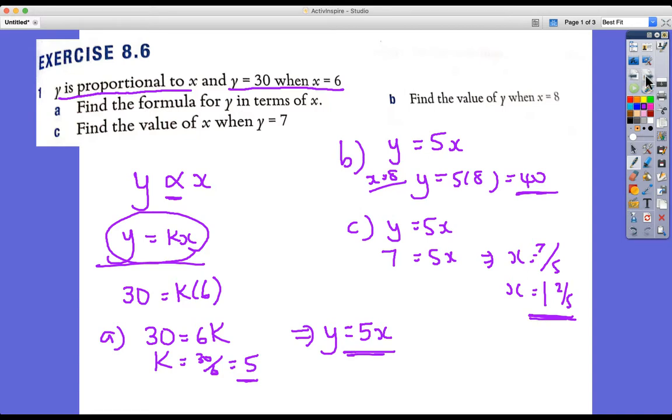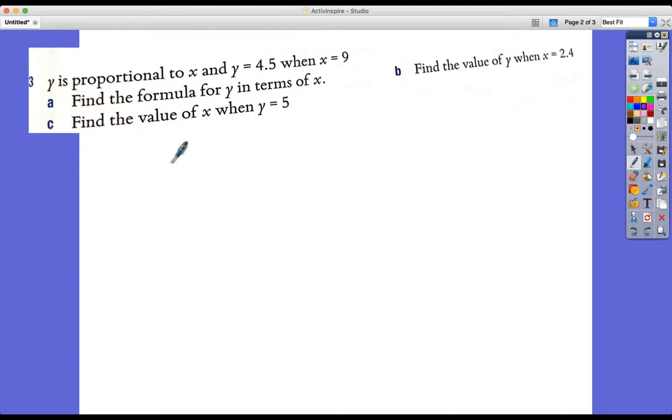We'll do one more on that type of question. Question 3. So Y is proportional to X. I'm going to write down the same idea, the same process. Y is proportional to X. We'll replace the proportionality sign with equals KX.